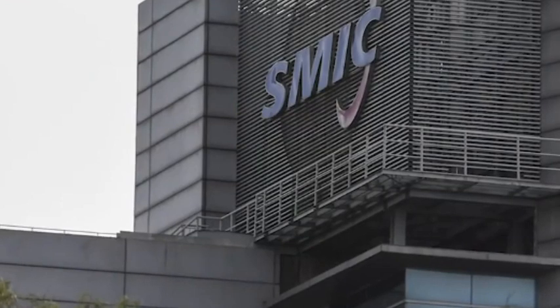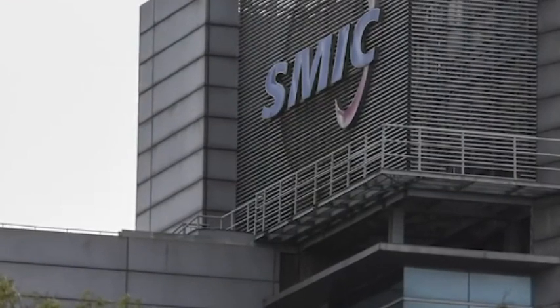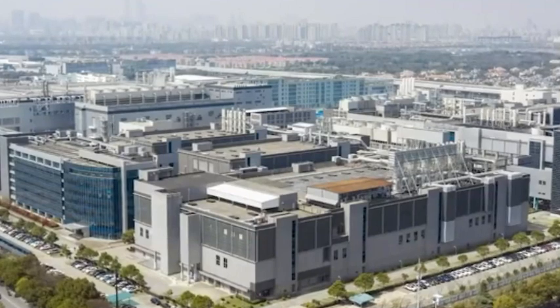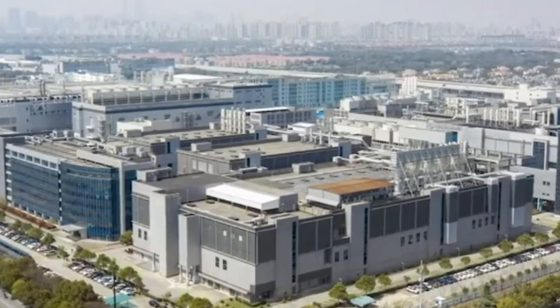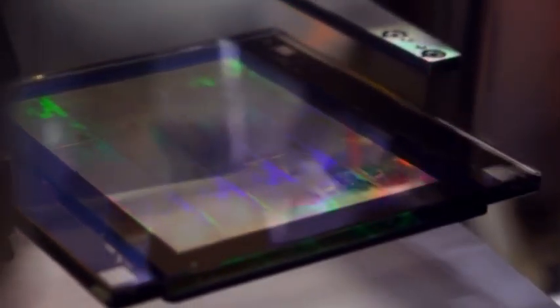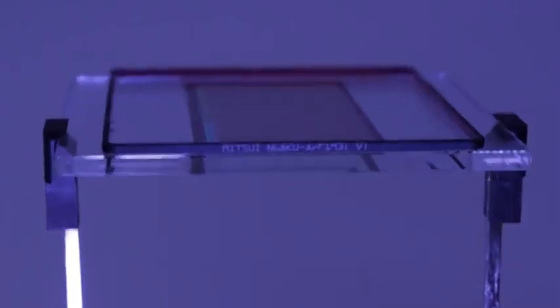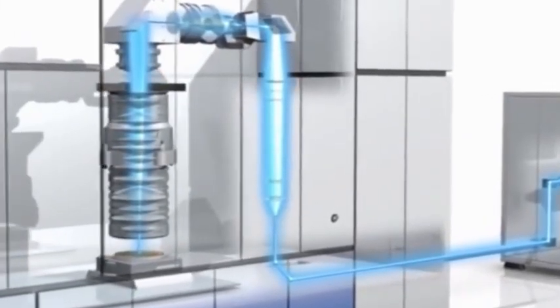But Japanese chips suddenly came out to promote the mass production of 2nm process, which will become a strong rival of TSMC. Japan's 2nm process is said to have entered the trial production stage recently, and it is expected to be mass produced by next year. The mass production time is estimated to be only a few months slower than TSMC.